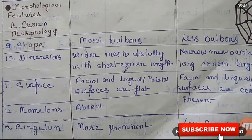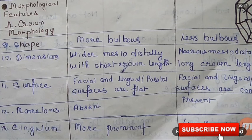Mamelons are absent in deciduous teeth but present in permanent dentition. Mamelons are one of the three rounded protuberances present on the cutting edge of an incisor tooth. When permanent incisors erupt, you can see the mamelons on the edges of the teeth. Cingulum is more prominent in deciduous teeth and less prominent in permanent teeth.